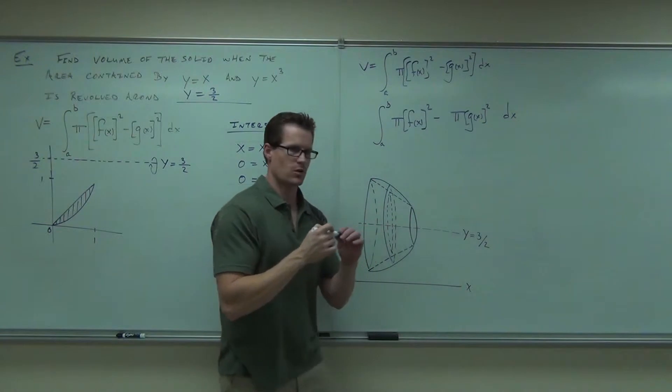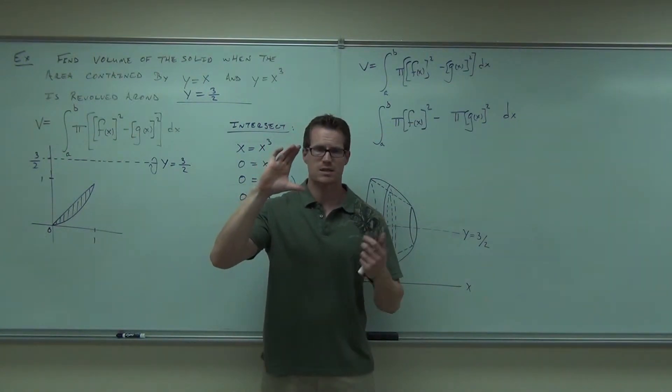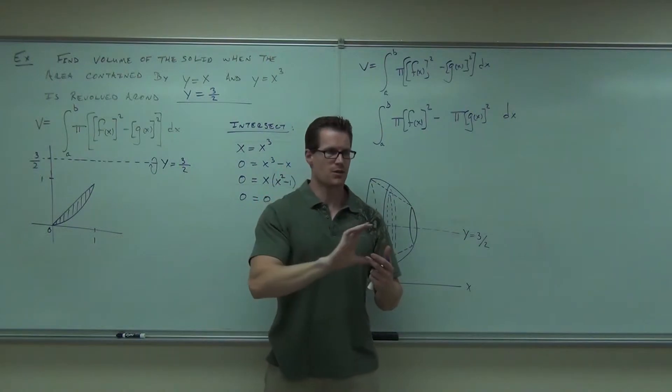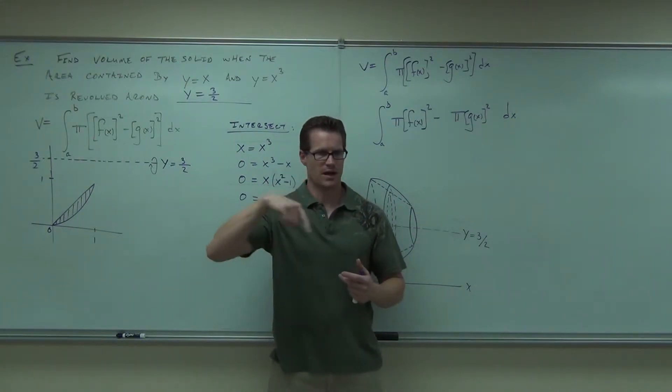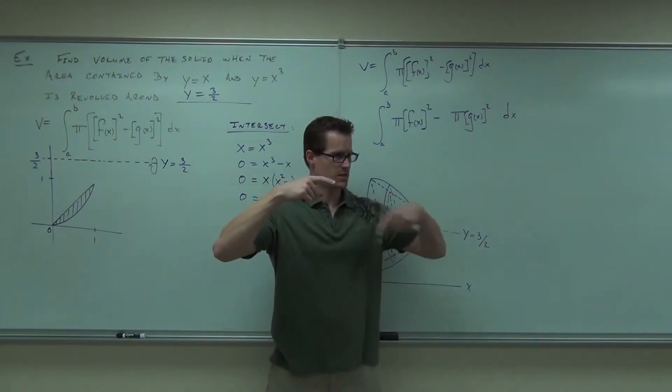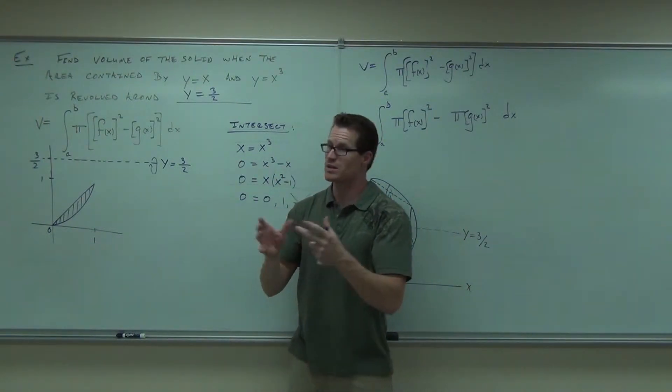Look. Find the radius, square it, times it by pi. Find the other radius, inside radius, square it, times it by pi. And then subtract them. That's the surface area of the outside one minus the surface area of the inside one. And then we integrate the surface area. That was the idea. Did you get the idea?